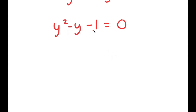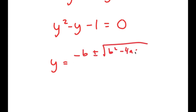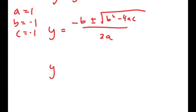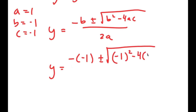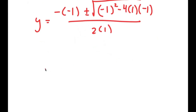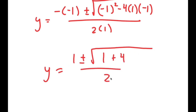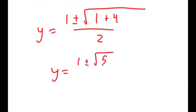What we have here is a quadratic equation. To solve this, I'm going to use the quadratic formula, which is negative b plus or minus the square root of b squared minus 4ac all over 2a. In this case, a is 1, b is negative 1, and c is negative 1. So I get y equals negative of negative 1 plus or minus the square root of negative 1 squared minus 4 times 1 times negative 1, all over 2 times 1. This is equal to 1 plus or minus the square root of 1 plus 4 over 2, which is equal to 1 plus or minus the square root of 5 over 2.